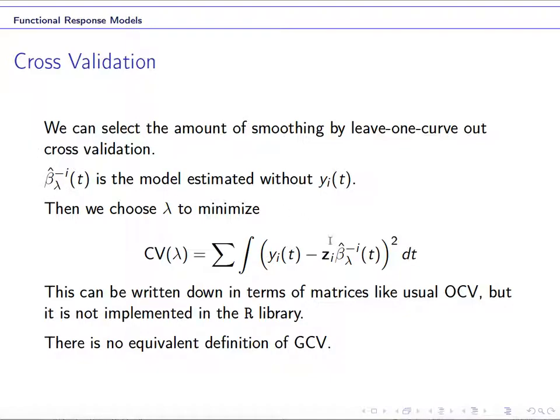After we got this estimation, you can look at the prediction for the i's subject. So basically, the prediction will be zi times beta minus i of t. And then you can look at this, this will be the prediction on the i's subject. So then you can do this for all the n subjects, and then you can sum them together. So this will be the cross-validation scores.